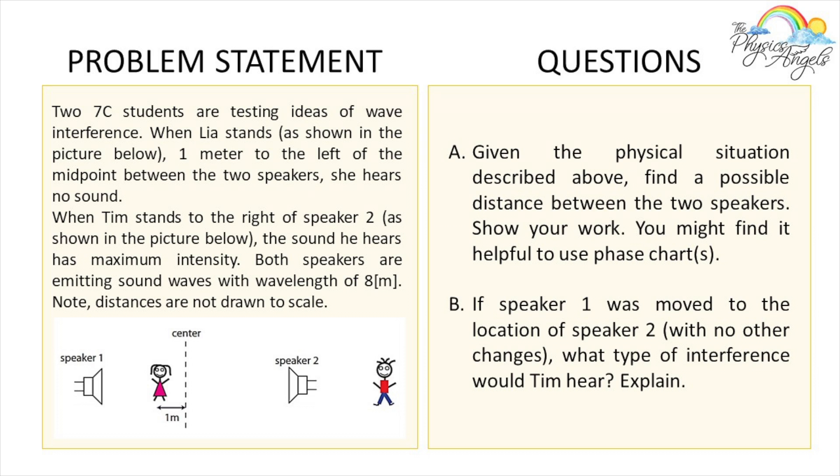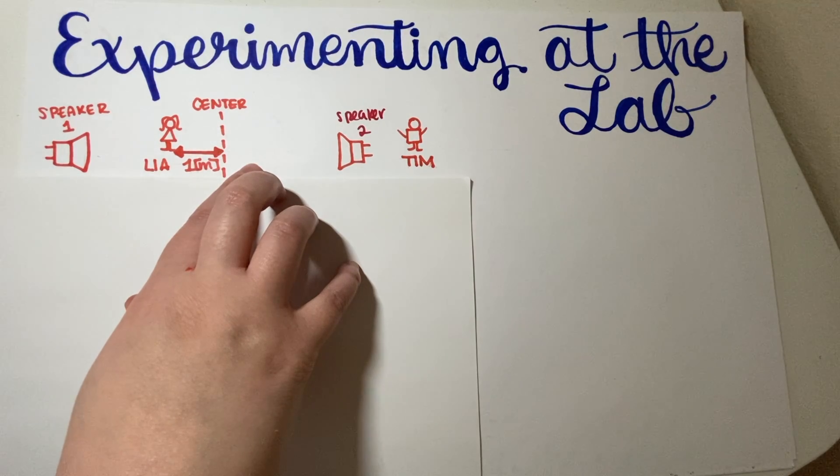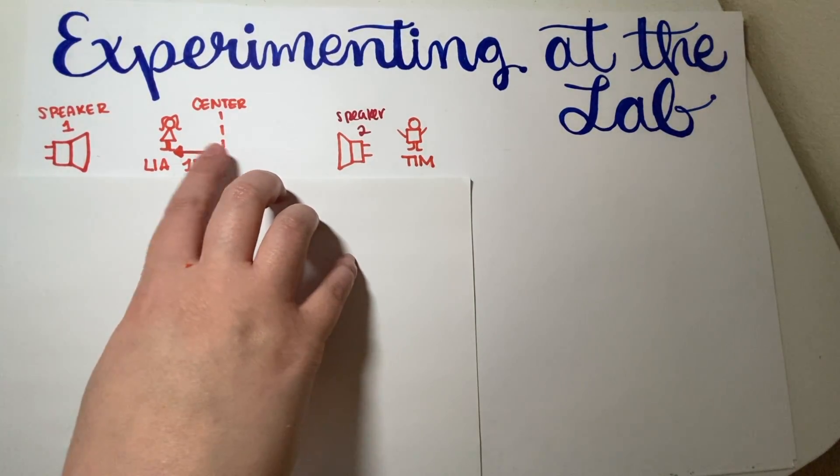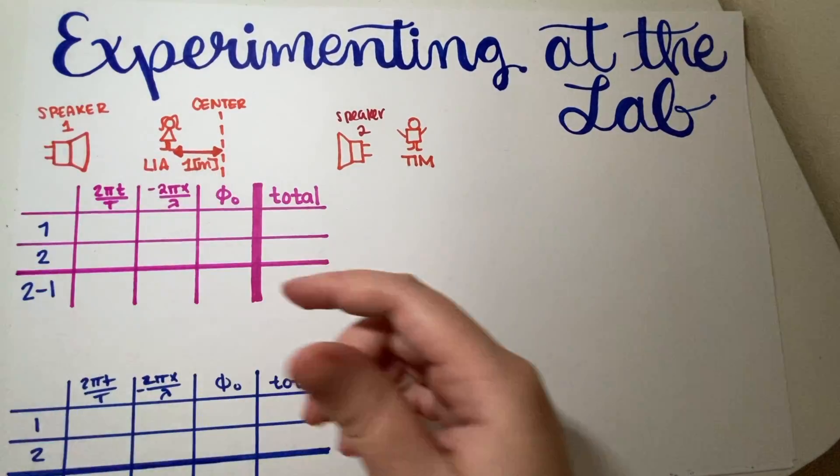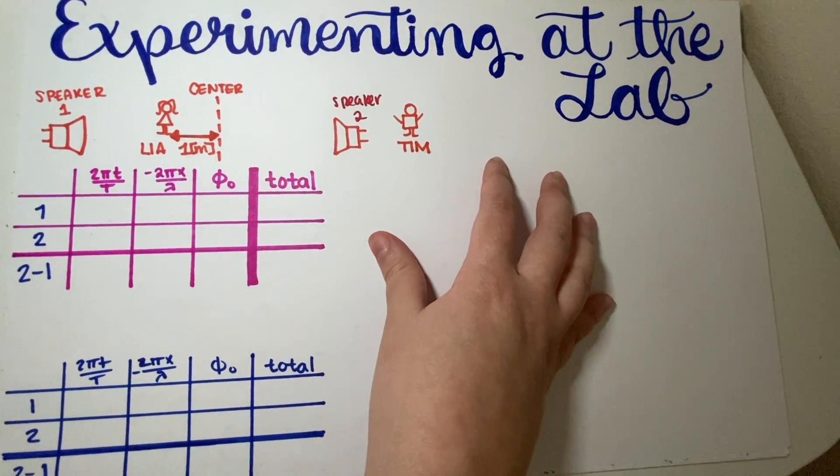Okay, so first problem. Given the physical situation described above, find a possible distance between the two speakers, show your work. Okay, so as you can see, I have everything written down over here. Now, on this particular quiz, we have two people who are experiencing this, Leah and Tim, and for that reason, originally I wanted to do two phase charts as the problem suggested.